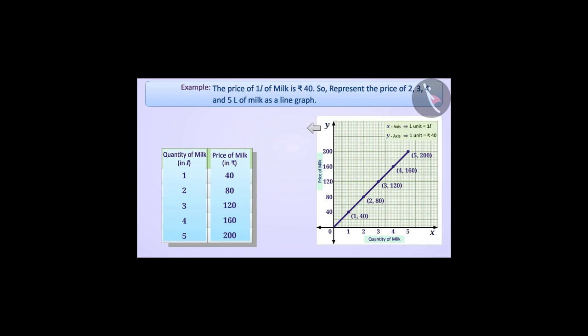The graph created is a linear graph. The graph shows that as the quantity of milk increases, so does the price. Therefore, this graph shows two quantities that are proportional.